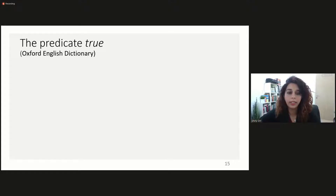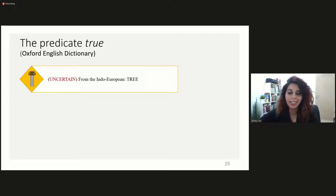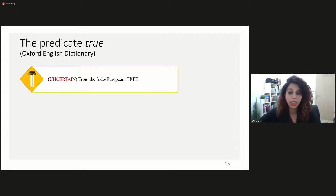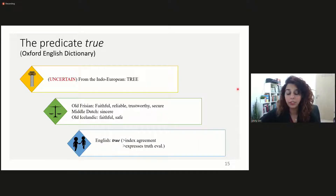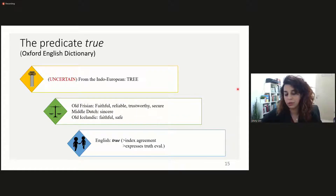A look at the Oxford English Dictionary indicates that the development of the English predicate 'true' is not so different. Although it is emphasized that this is uncertain, there is a suggestion that the predicate 'true' is perhaps related to 'tree' — a suggestion that echoes the senses of foundation and strength that are the source meaning in the development of truth and agreement in Semitic languages. This basic meaning develops into more abstract meanings such as faithful, reliable, and trustworthy in Old Frisian; sincere in Middle Dutch; and faithful and safe in Old Icelandic — which eventually developed into the predicate 'true' that expresses truth evaluation and indexes agreement.